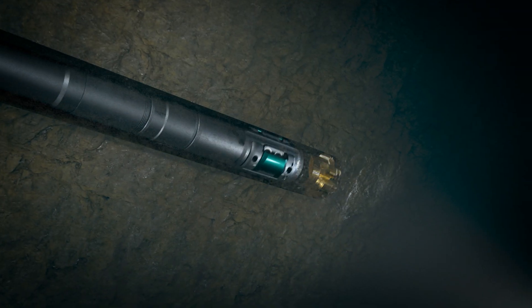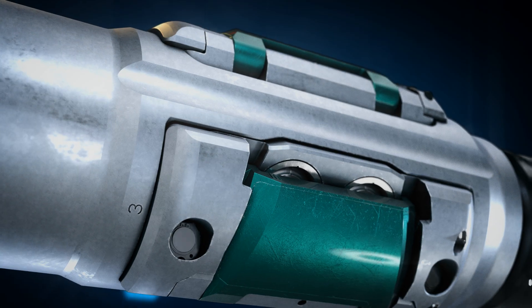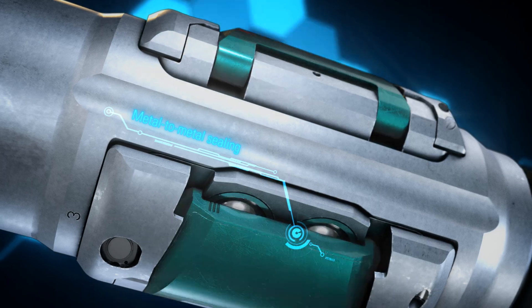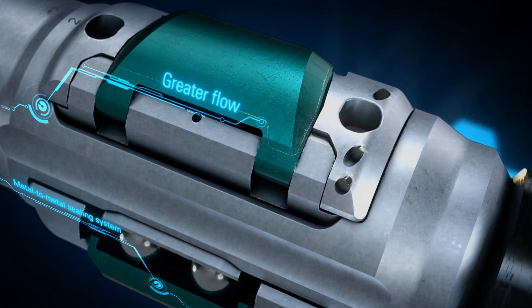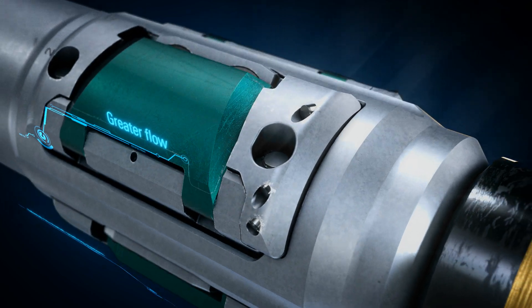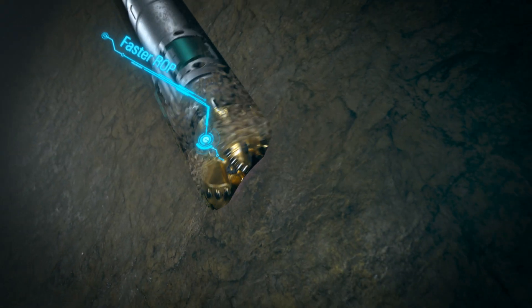The PowerDrive Orbit G2 RSS maintains the pad metal-to-metal sealing system, which expands the operating envelope to greater flow, higher pressure and more aggressive drilling fluids, enabling faster ROP.